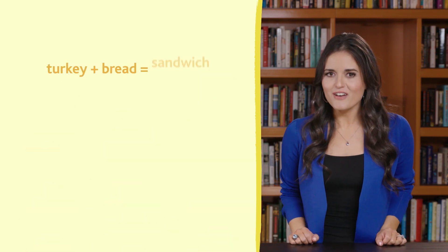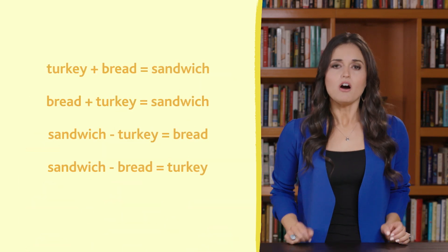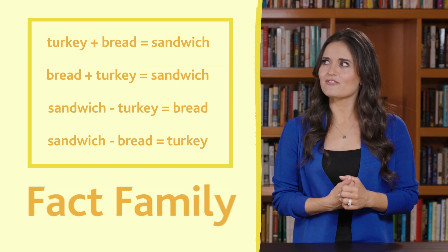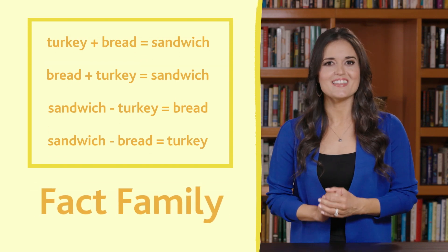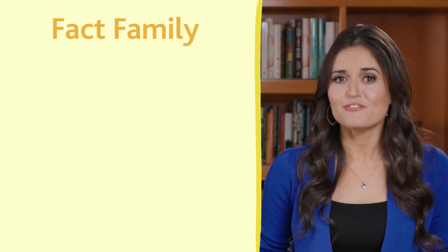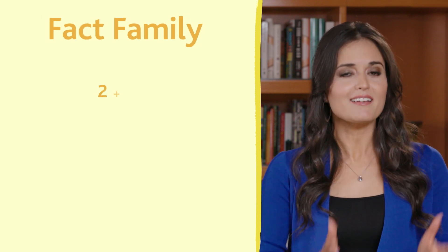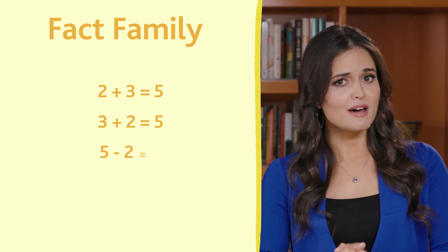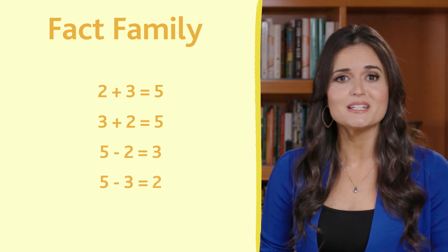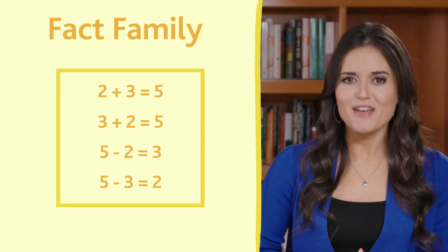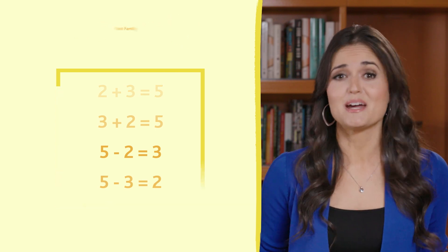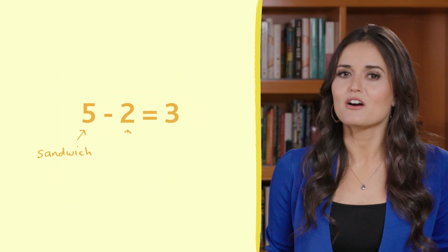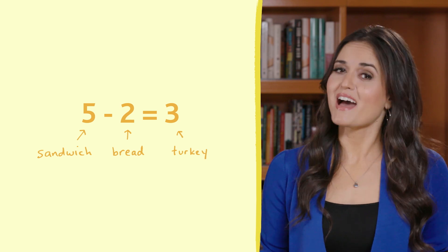We've now created four facts out of the same three things. All of these facts are related to each other, so we could call this a fact family. In the same way, we can make a fact family from three numbers: 2 plus 3 equals 5, 3 plus 2 equals 5, 5 minus 2 equals 3, and 5 minus 3 equals 2. That's a fact family in math, and it's the same as the sandwiches. In this case, the 5 is the sandwich, and the 2 and 3 are the bread and turkey. Not so bad, right?